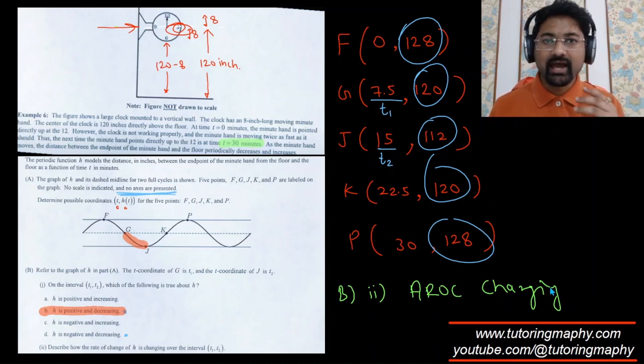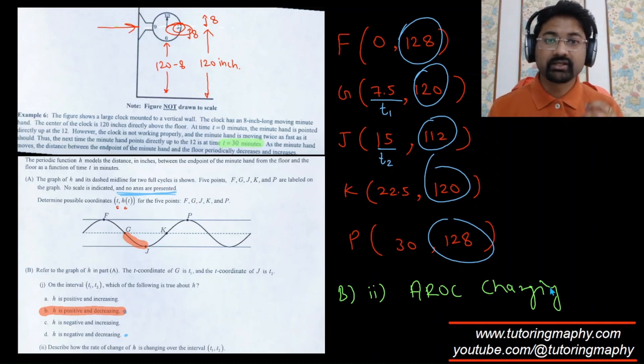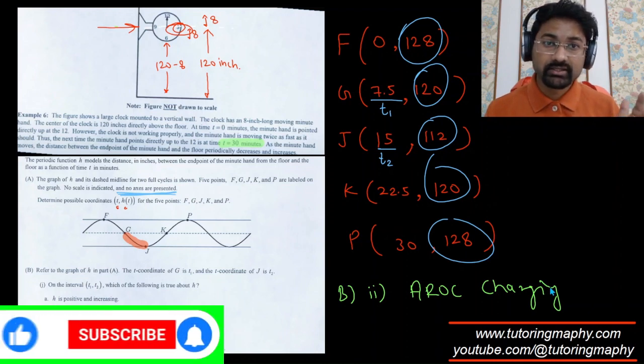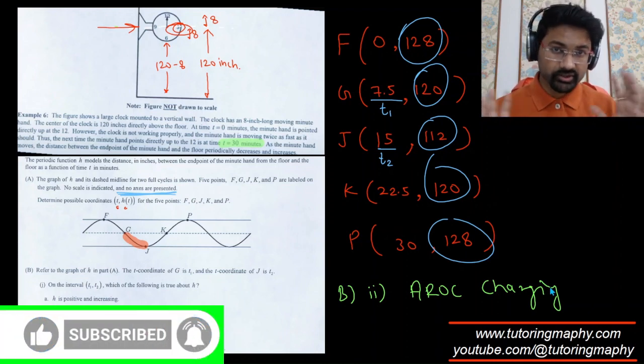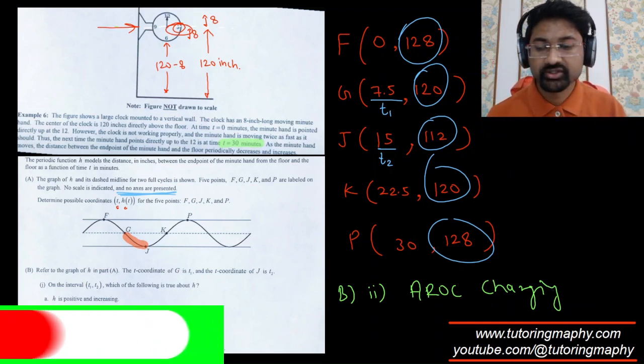However, if I just say that the average rate of change is positive, it means that the function is increasing, nothing to do with concavity. And if the average rate of change is negative, then the function is decreasing. Please be careful about how the question is being phrased.